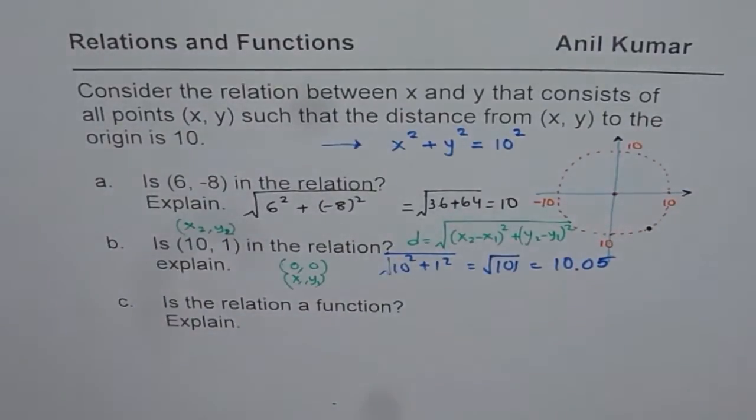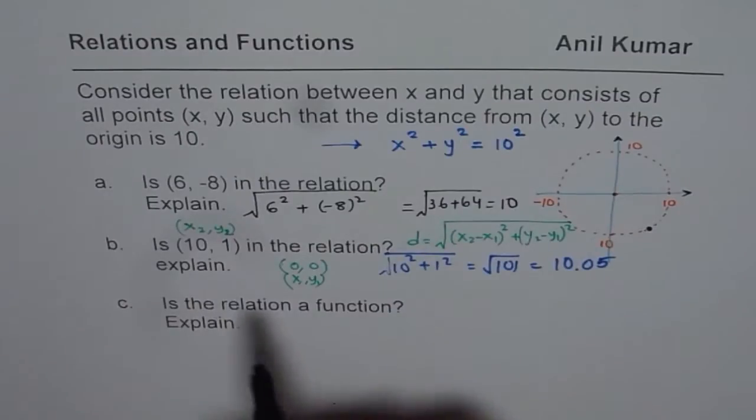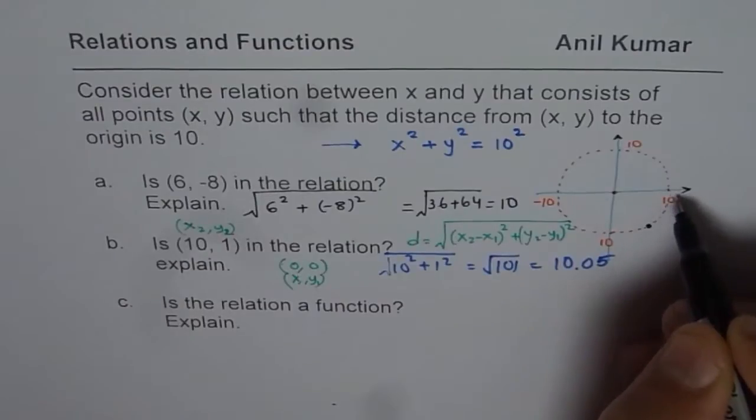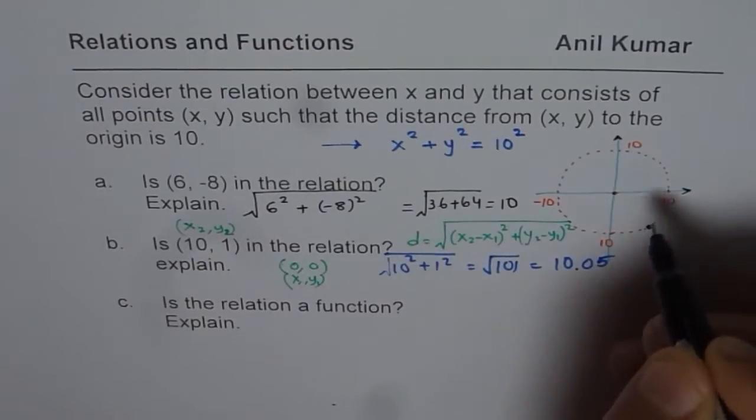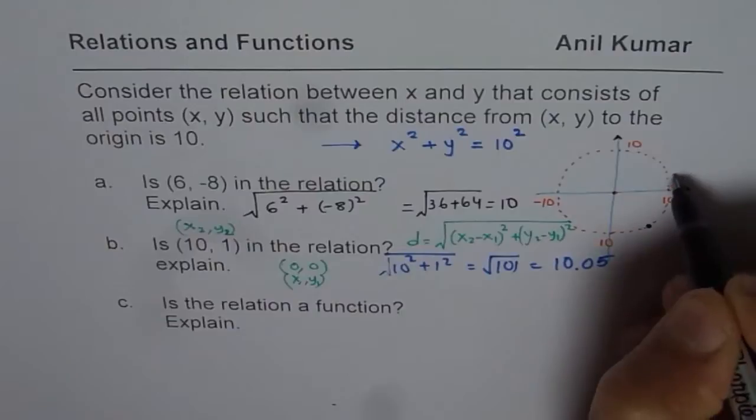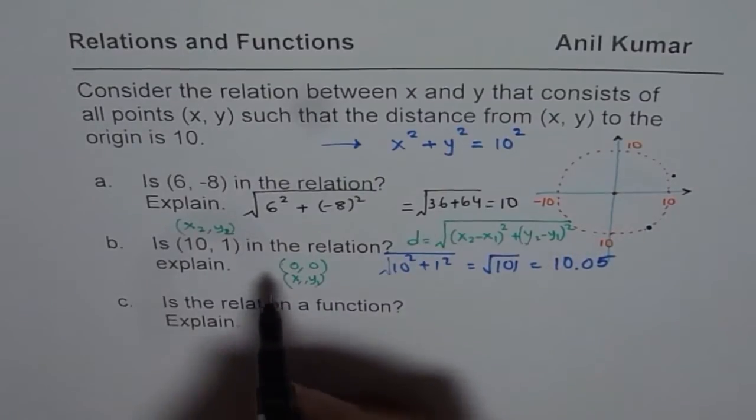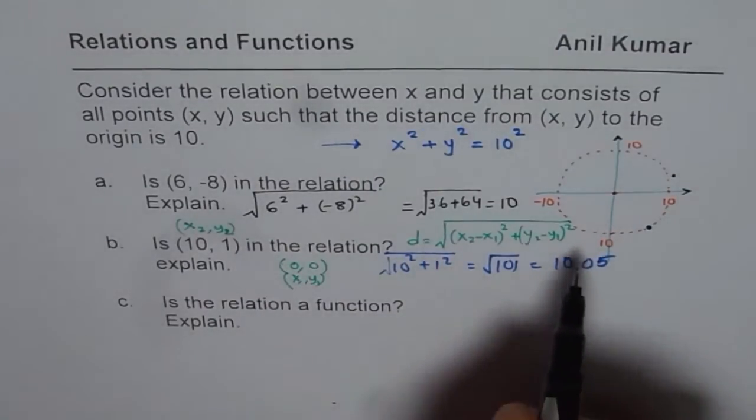So that means, definitely, this point is not on the circle. This point is somewhere outside the circle, 10 and 1. So, x value of 10 and y value of 1. So at 10, it is kind of 1, maybe somewhere outside, slightly away from the center. So, outside the circle. This does not fall on this relation.